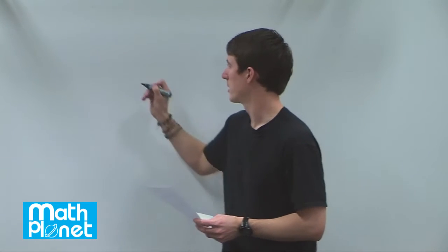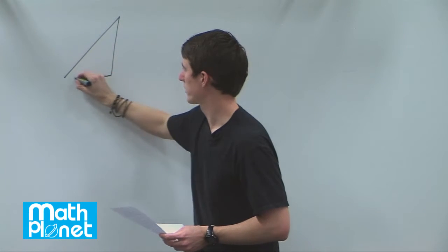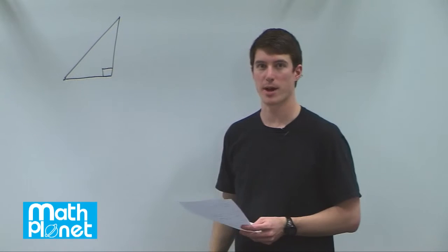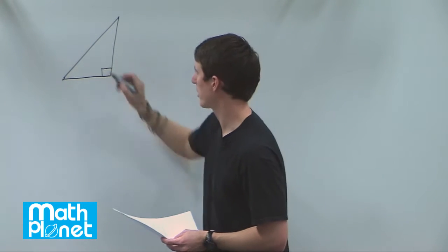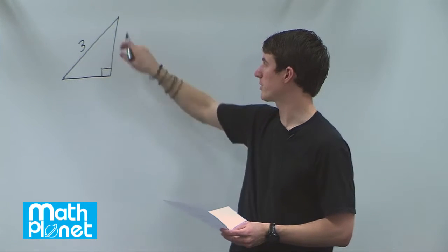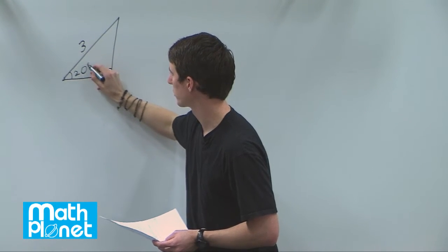So here's a little bit of trigonometry. If we're given a right triangle, say it looks like this, so here's a right angle, and we know only two things about this triangle. We know that this hypotenuse has a length of 3, and we know that one of these two angles is 20 degrees.